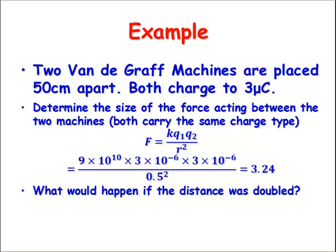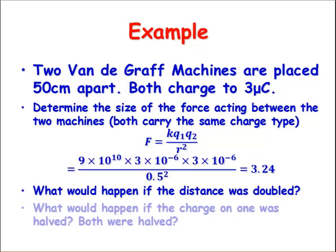Without having to calculate it, what would happen if the distance was doubled? If we doubled the distance, we'd end up with a quarter of the force. So the force would be less than 1 here. What if we were to halve one of the charges? If we halve one charge, that will halve the force. What if both of them were halved? We'd halve it twice over or we'd get a quarter of the force.